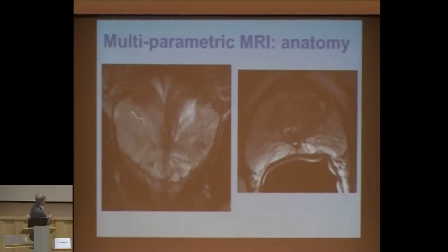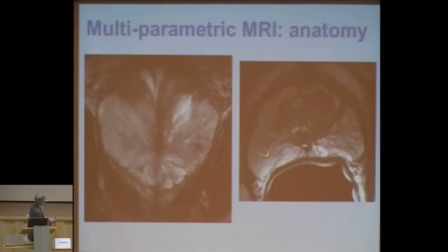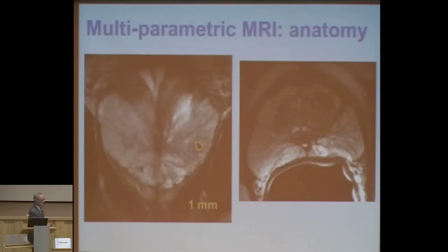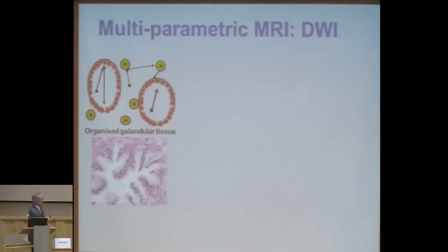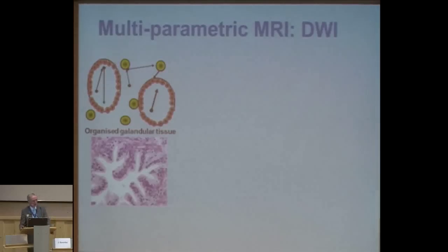Here you see the prostate on the coronal view, axial view with benign prostatic hyperplasia, and if you carefully look you can see a very small tumor — high-resolution images. However, those dark spots can also be something else like fibrosis or prostatitis. So we have more techniques.